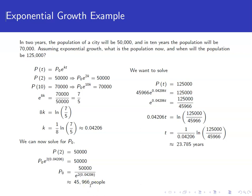To find out when the population will be 125,000, we set the function equal to 125,000. We know that 45,966 is the current population. Divide that over, we get e^(0.04206t) = 125,000/45,966. Take the natural log of both sides, then divide by 0.04206, and get about 23.785 years.